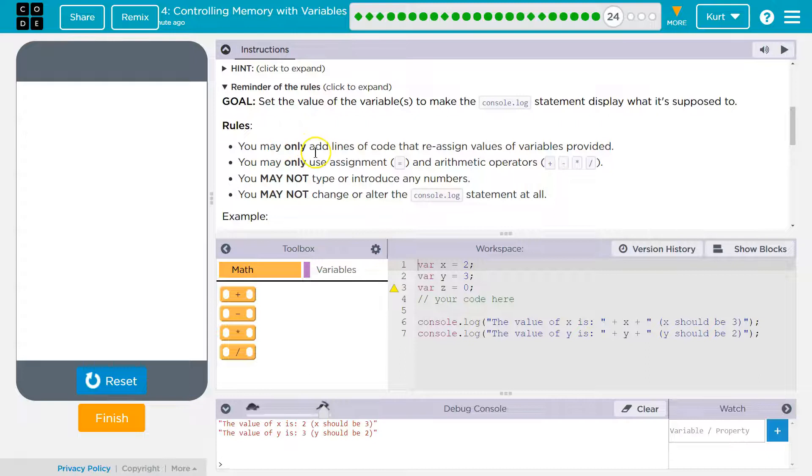You may only add lines of code that reassign variables. That means like X equals Y, something like that you can do. You may only use equals and arithmetic operators, like plus, minus, times, and divide.